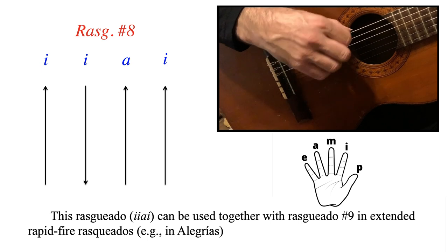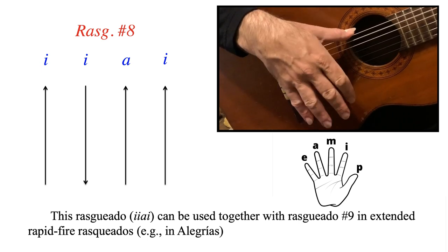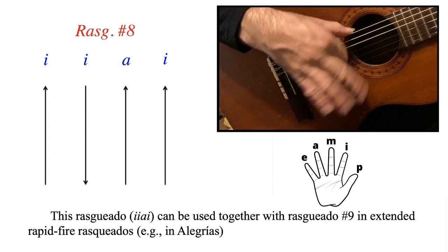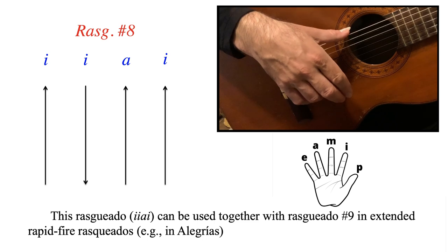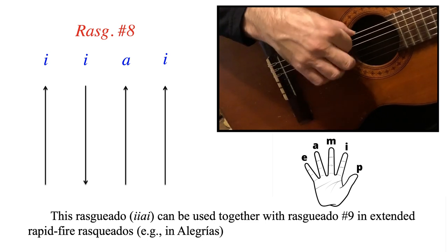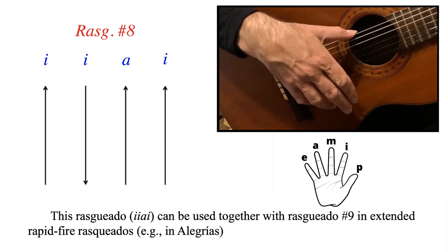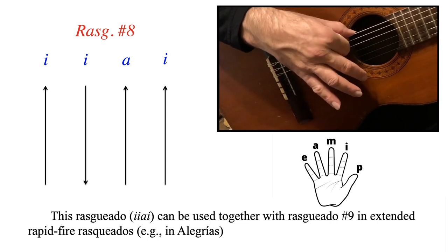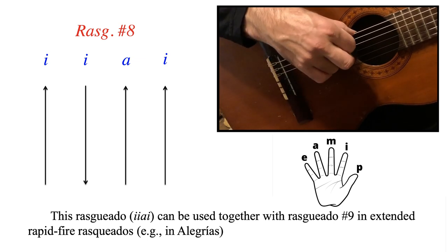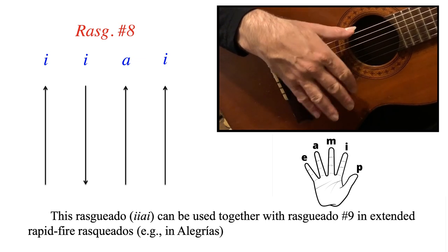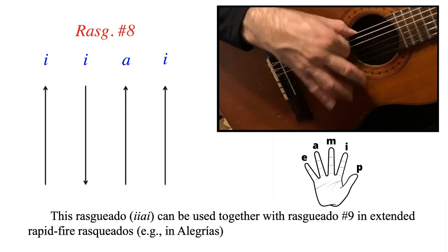So once again, downward I, upward I, downward A, downward I. Down I, up I, down A, and down I.